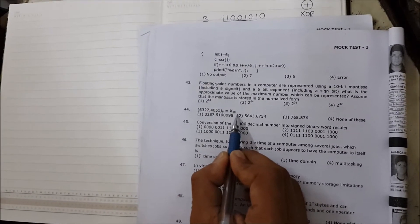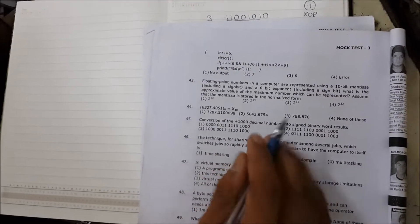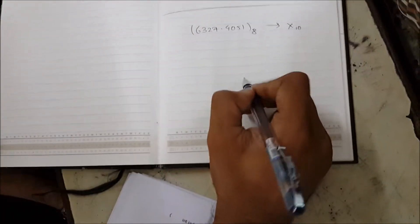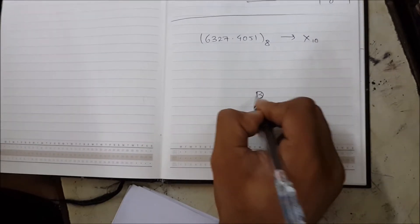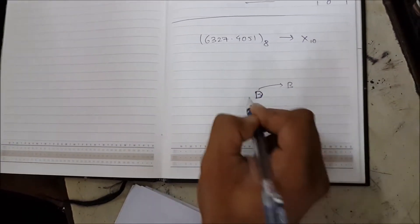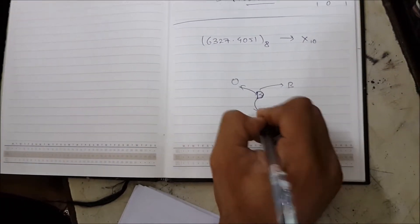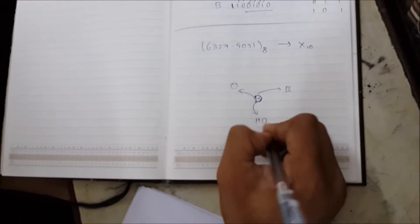For that, we have to use powers of 8. Whenever you convert from any system to any system—let's say from decimal to binary, or decimal to octal, or decimal to hexadecimal number.